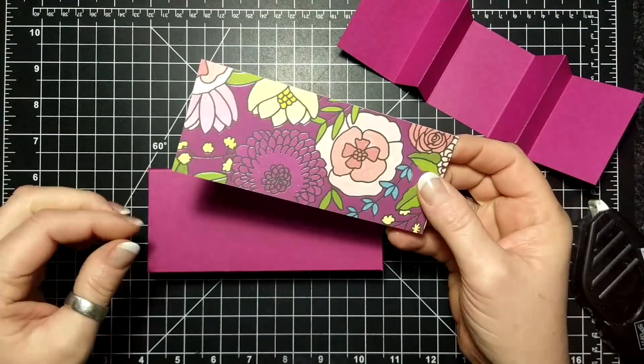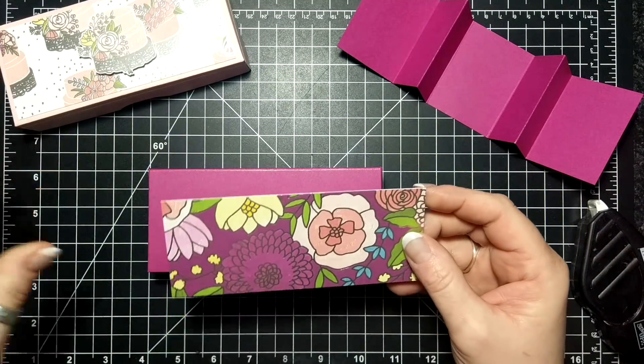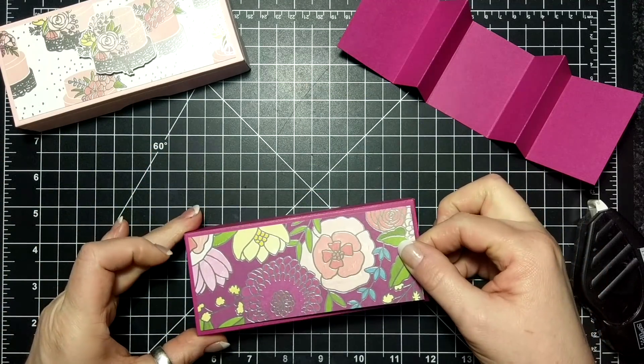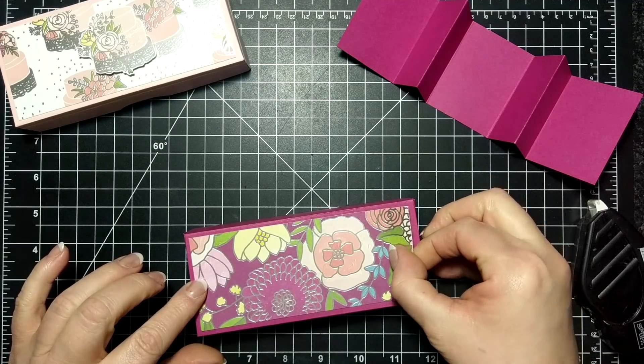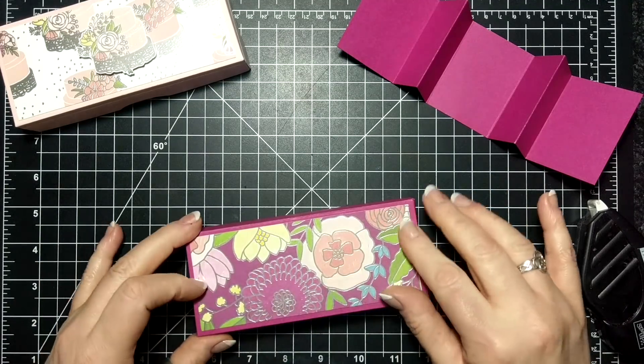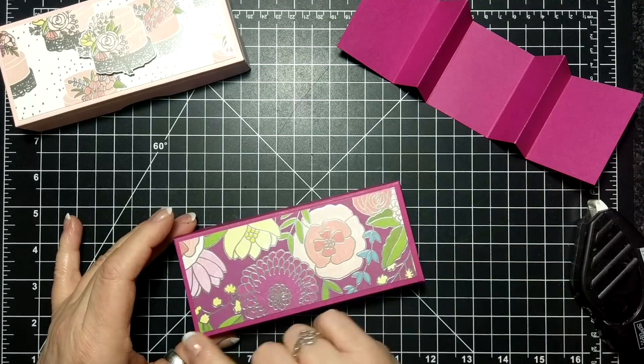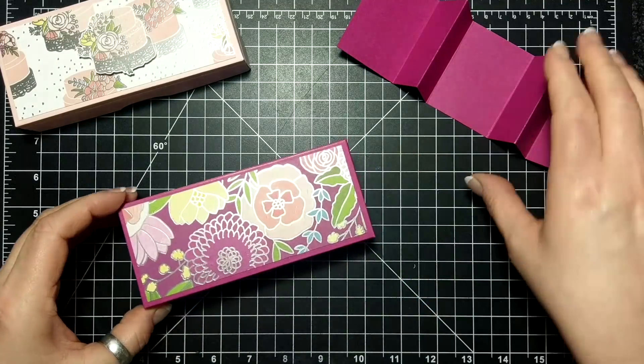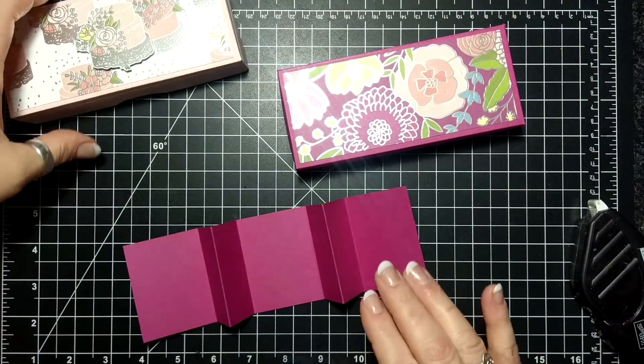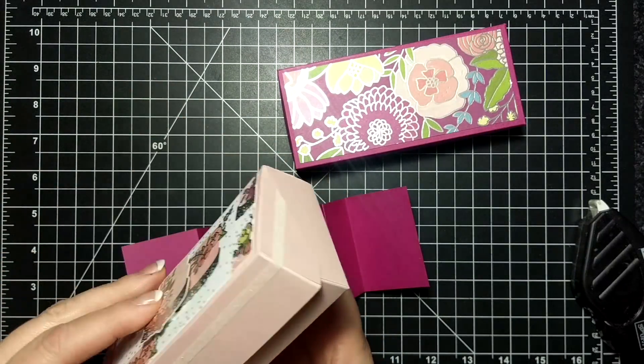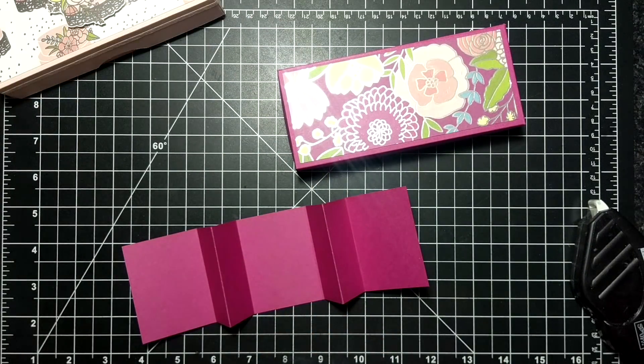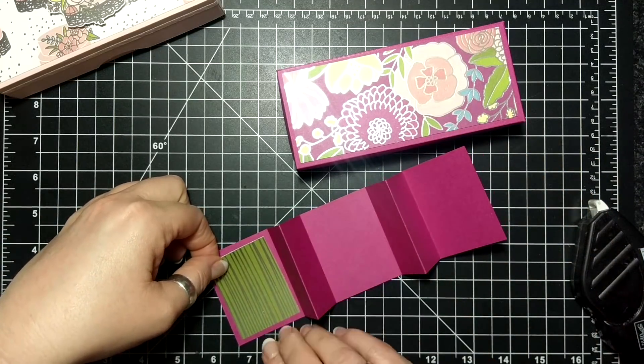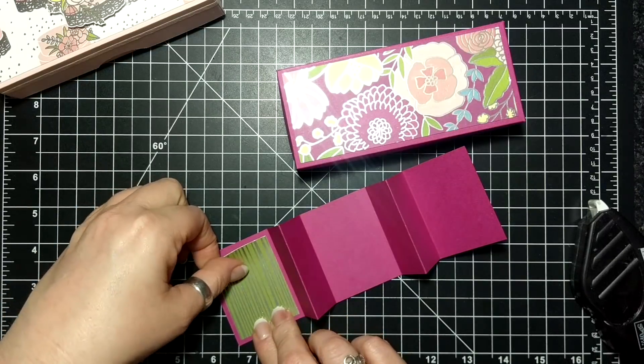Alright, so what I have here is the same designer series paper as this. This is the Sweet Soiree, and this piece of paper is five and three quarters long and two and three eighths wide. And then I'm going to decorate the inside here. I have three pieces of this green and silver paper that's in this gorgeous paper.